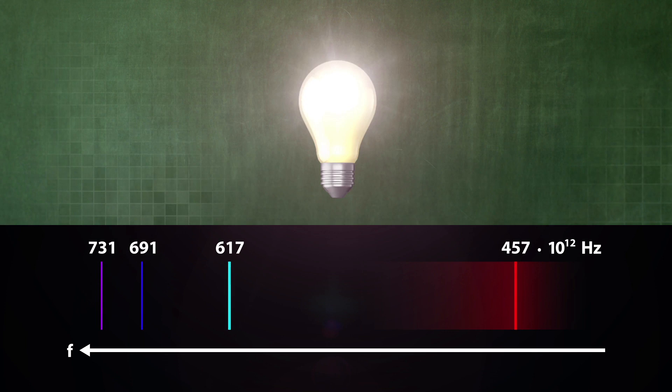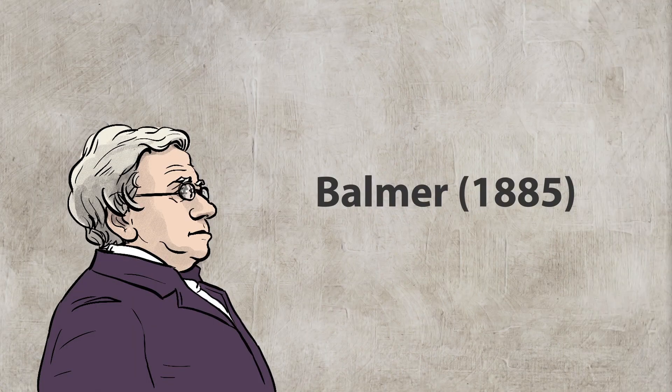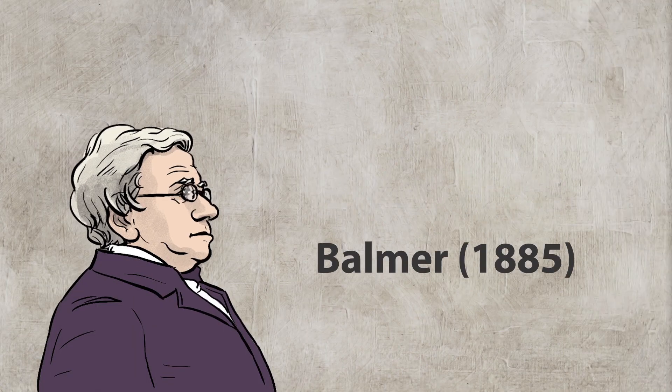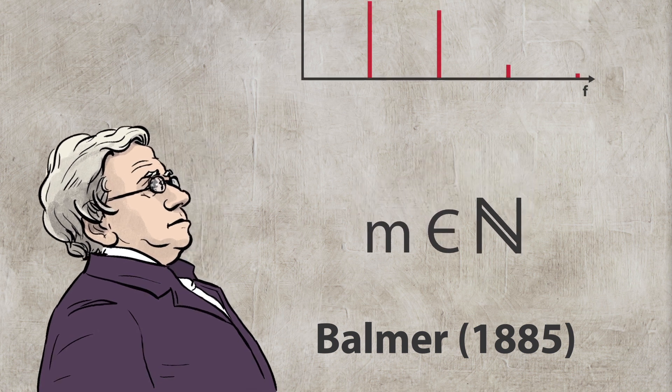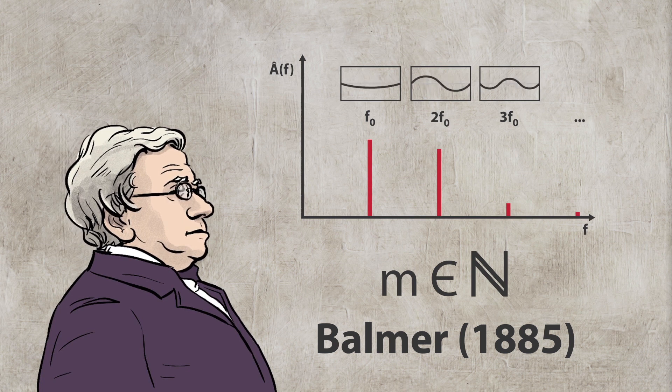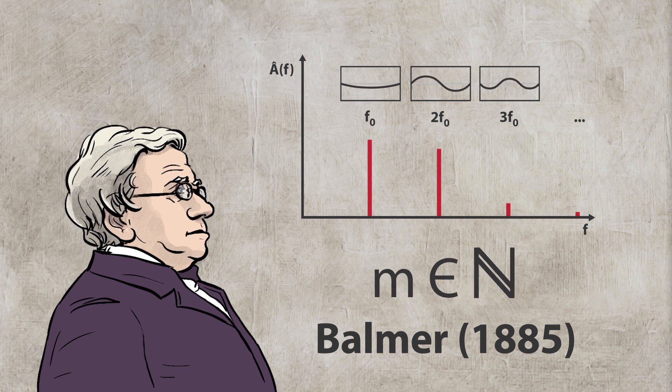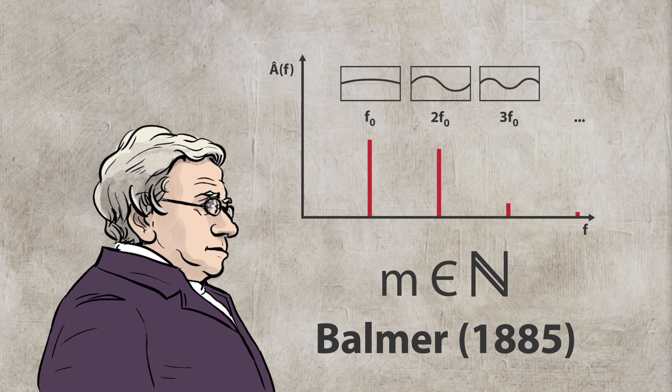To do this, we need a specific concept. Johann Jakob Balmer, a Swiss teacher, proposed using natural numbers m in his formula. He did so, perhaps by analogy with the spectrum of a guitar string, because it involves multiples, that is, m times a fundamental frequency.